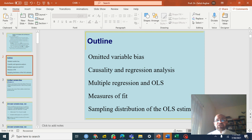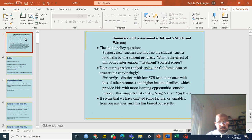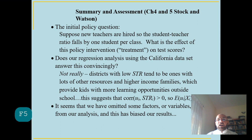Welcome to Chapter 6: Linear Regression with Multiple Regressors, or Multiple Linear Regression, from Introduction to Econometrics by Stock and Watson. Before I go to Chapter 6, I am going to give a brief summary of what we have been discussing in Chapters 5 and 4. The policy question was whether class size or student-teacher ratio reduction will lead to improvement in test score.